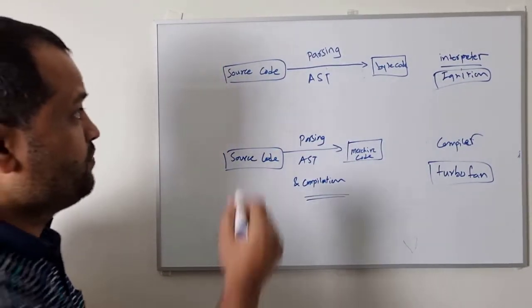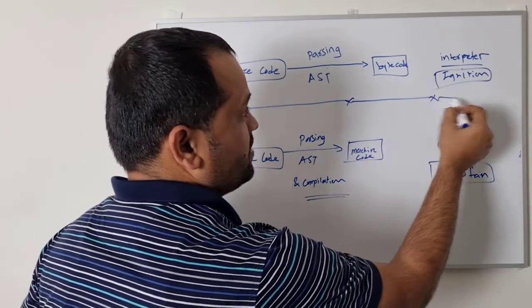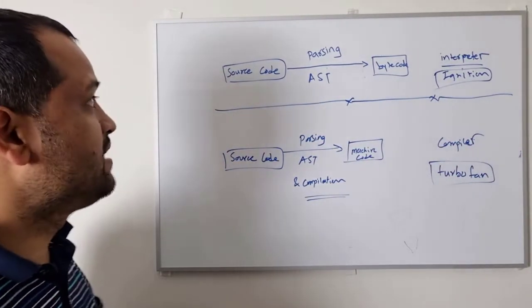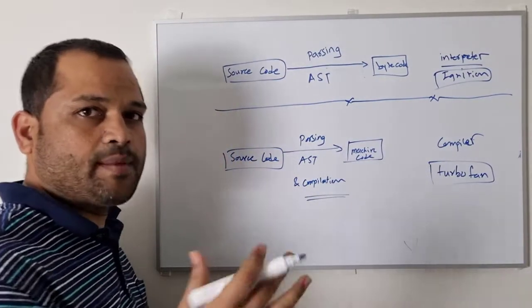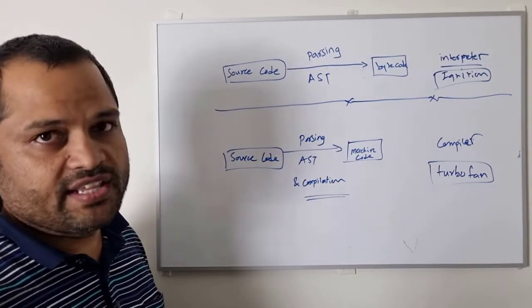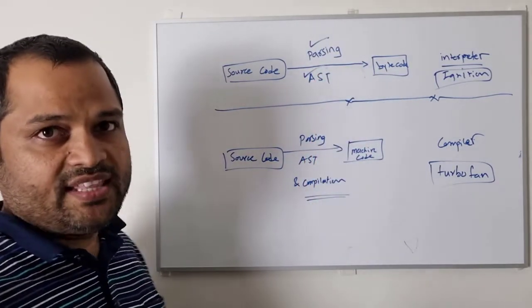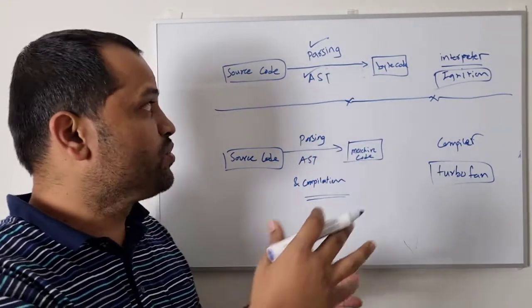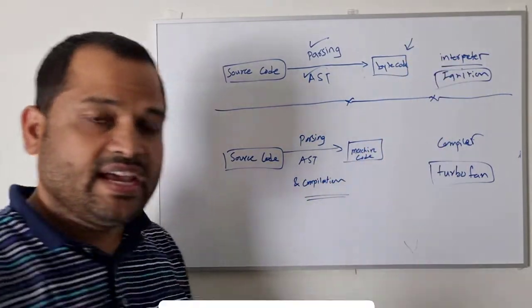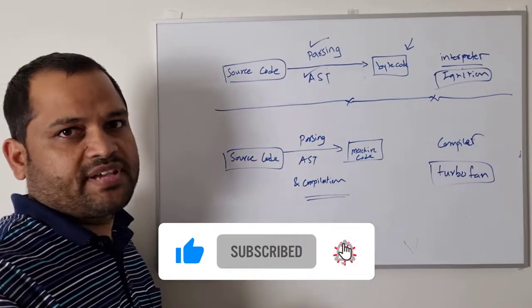At the top, we have the steps that the interpreter will take to interpret the code. What happens in the interpreter is that there is a source code — for example, a JavaScript file. It takes that JavaScript file, then it will parse it, it will create the abstract syntax tree, and then it will convert that source code into the byte code at runtime. This is very important — at runtime, everything is happening. That's what happens in the interpreter case.